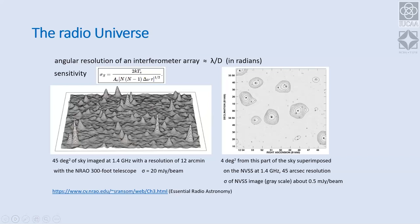Besides angular resolution, sensitivity is equally important. Telescopes like the VLA and GMRT reach micro-Jansky levels. Sensitivity depends on: the effective area of the antenna (larger is more sensitive); the number of antenna pairs in an interferometer; the observing bandwidth (broader bandwidth gives better sensitivity); and integration time (longer integration improves sensitivity). However, radio frequency interference limits how much bandwidth is usable, and available observing time is finite because many astronomers compete for telescope time.